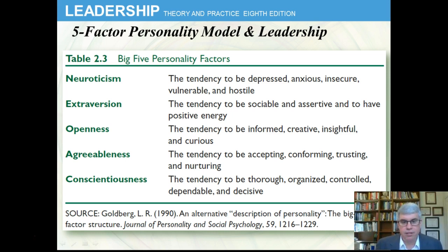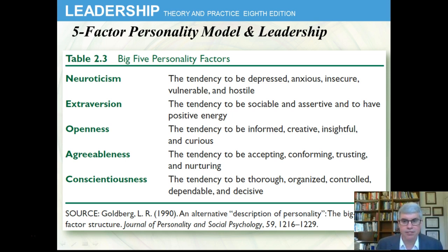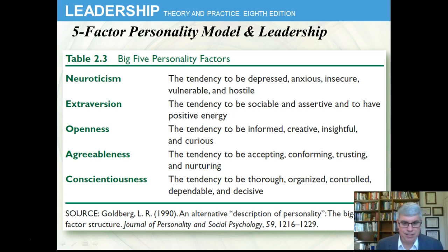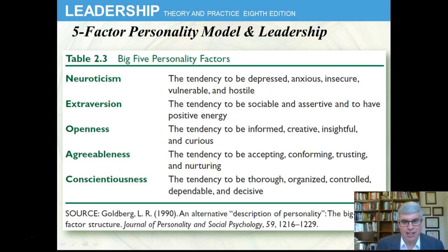Agreeableness is the fourth factor — the tendency to be accepting, conforming, trusting, and nurturing in one's interpersonal relationships. Then there's conscientiousness, which is really important in all fields of leadership and organizational psychology — the tendency to be thorough, organized, controlled, dependable, and decisive. If you get all your assignments in on time, follow all the rules, and like APA formatting, that's a sign of being highly conscientious.